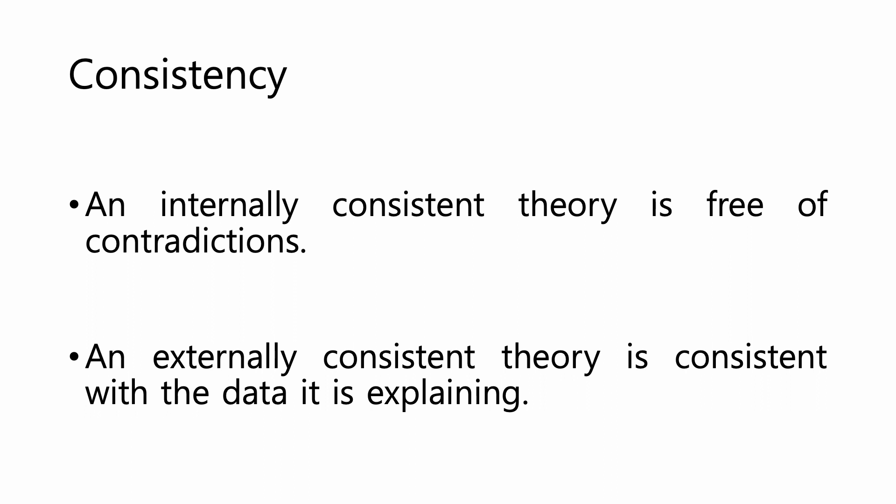Let's talk about step one: consistency. Consistency is a requirement of rationality. In order to be a rational thinker, your beliefs, ideas, and theories have to be consistent. There are two ways a theory may or may not be consistent. An internally consistent theory is free of logical contradictions. An externally consistent theory is consistent with the data it is explaining. A minimal requirement before moving to steps two, three, or four is to ask whether a theory is consistent. If it's not, that's the end of the story.